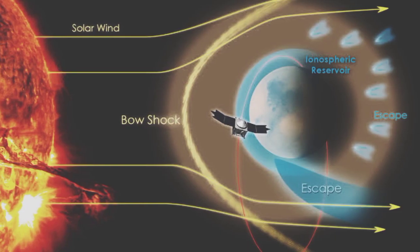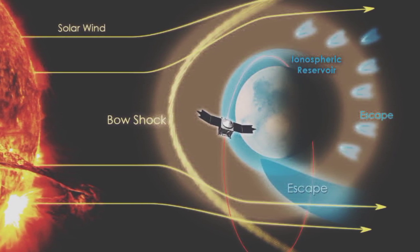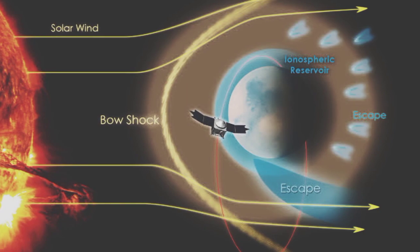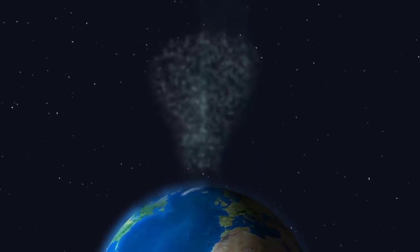It works similarly to evaporation but on a different scale. In the atmosphere, oxygen, hydrogen, and helium atoms absorb enough energy from the sun to escape the atmosphere, according to Granoff. So how do these processes affect Earth's overall mass?